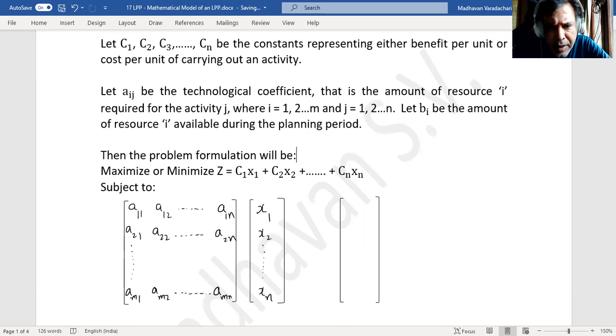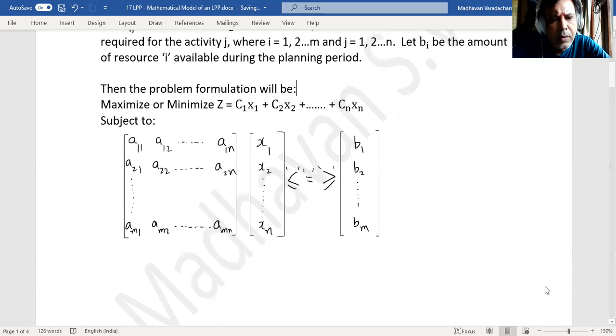Then here, depending on whatever is there in the problem, it may either be less than or equal to, or it may be equal to, or it may be greater than or equal to. It can be any of these symbols. Then here you have b1, b2, and so on up to bm. This will be what you call m by n matrix. This is n by 1 matrix, so the result will be m by 1 matrix.